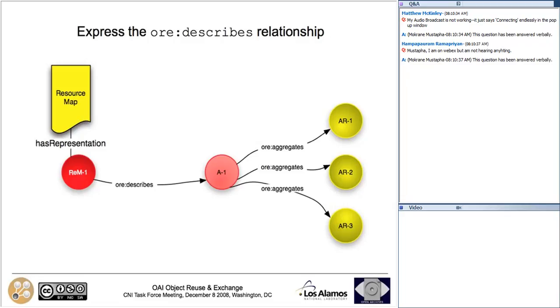The reason that you want to be able to discover the resource map that describes the aggregation from the aggregation URI itself is that it is the aggregation URI that would be referenced. And hence, clients would happen upon the aggregation URI, and they would have to go find the resource map in order to understand what the aggregation was all about.